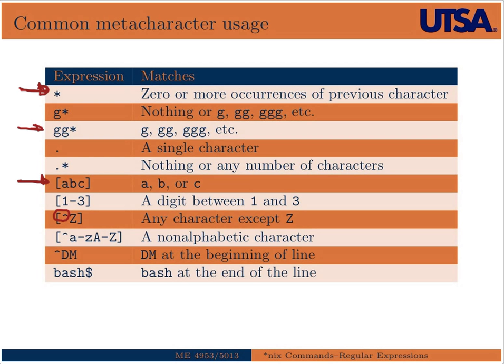This can also be combined with ranges. So [^a-z] would select any non-lowercase alphabetic character, and adding [^a-zA-Z] would negate all alphabetic characters, matching any non-alphabetic character. It's a bit confusing because the caret inside a bracket is a negate symbol, but a caret outside of a bracket indicates the beginning of a line. So if we wanted to search for 'DM' at the beginning of a line, we would use caret DM.